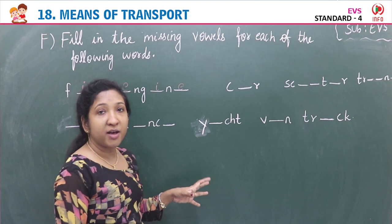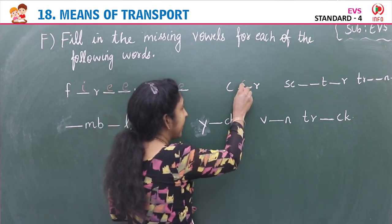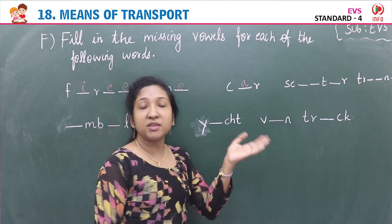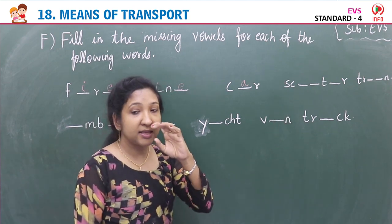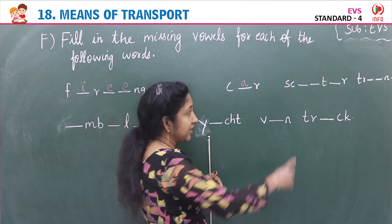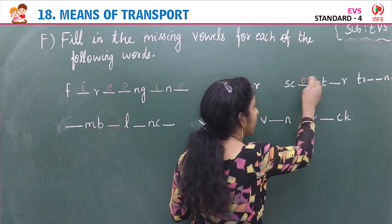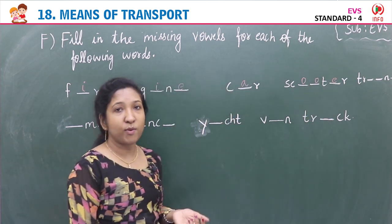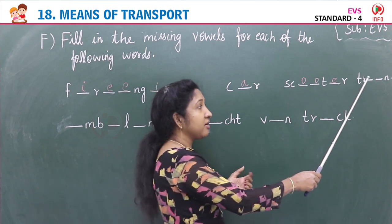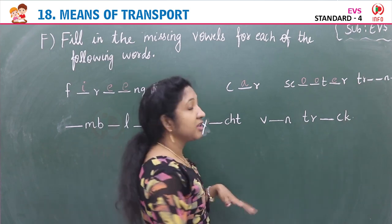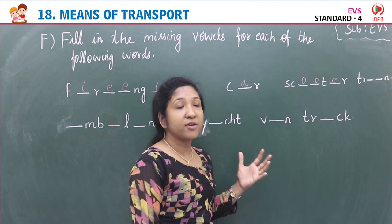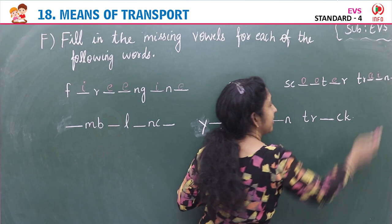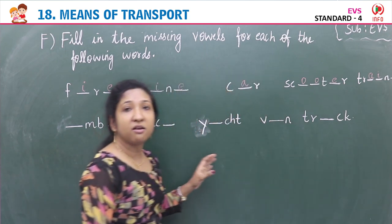Second image is a car — C-A-R, missing vowel A. Third image is a scooter — S-C-O-O-T-E-R, missing vowels O and E. Fourth image is a train — T-R-A-I-N, missing vowels A and I. Second row, first image is an ambulance — A-M-B-U-L-A-N-C-E, missing vowels A, U, A, E. Next is a yacht — Y-A-C-H-T, missing vowel A.